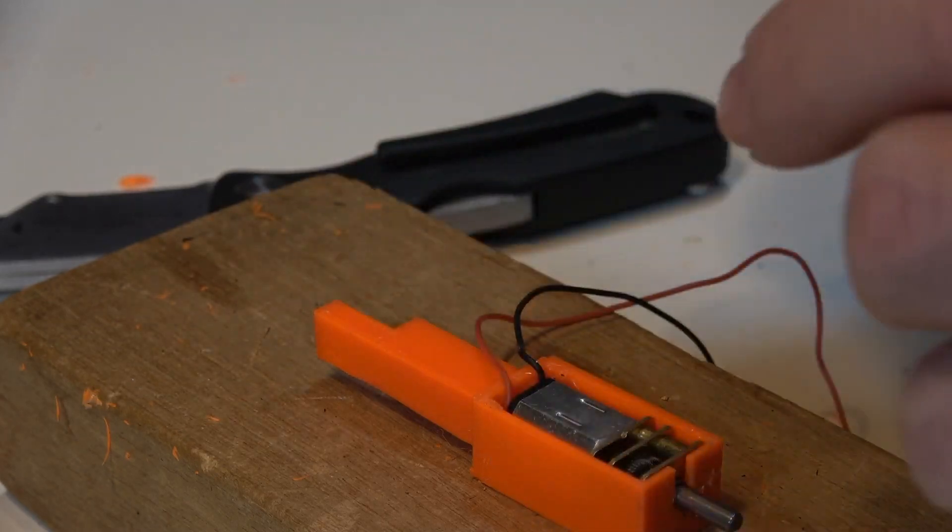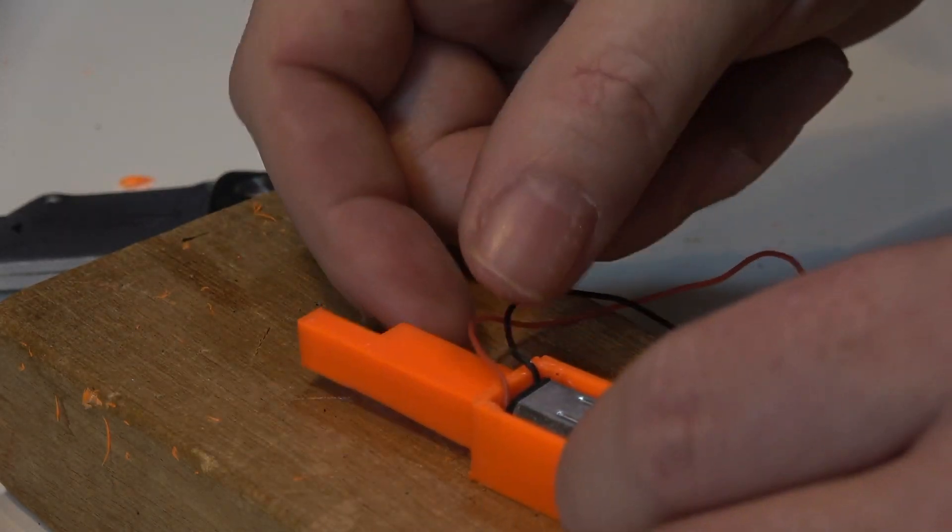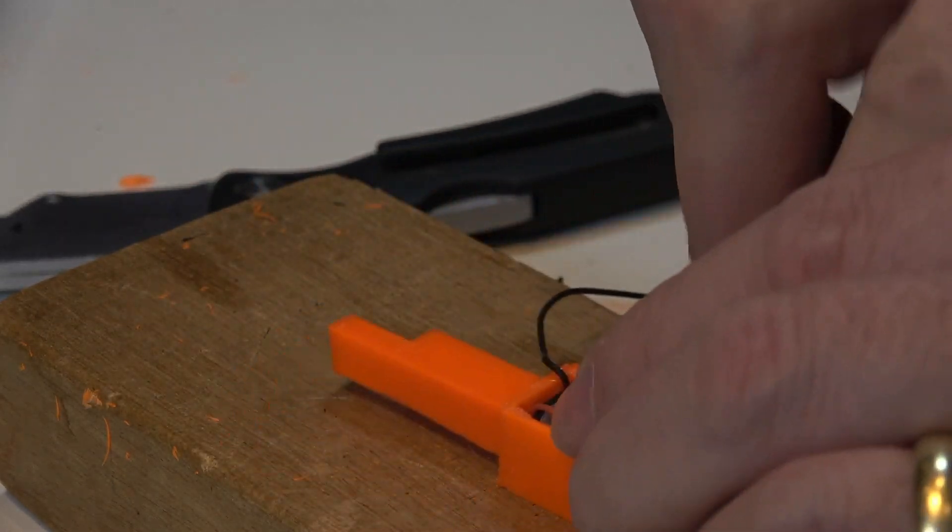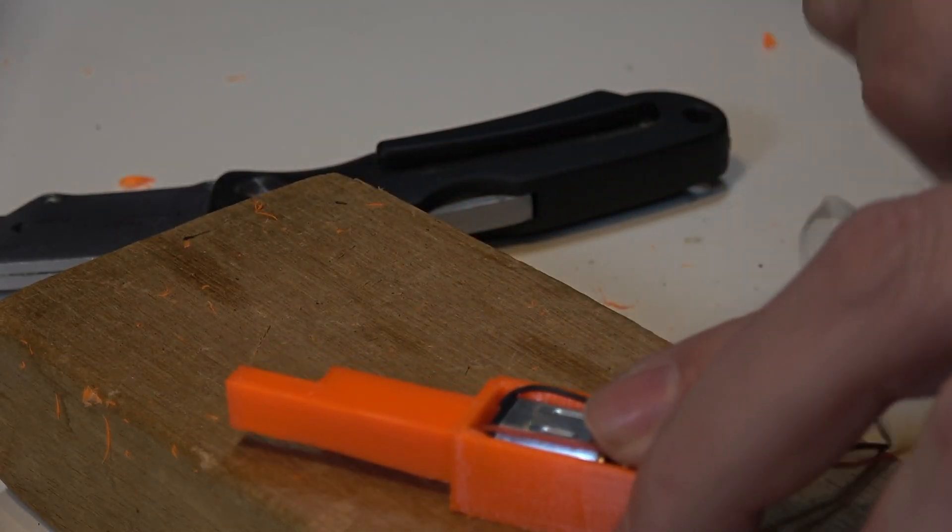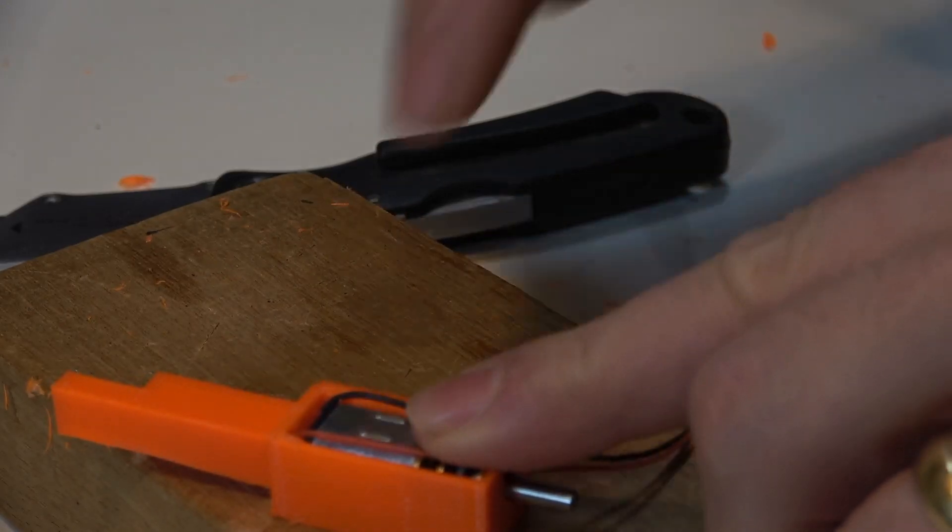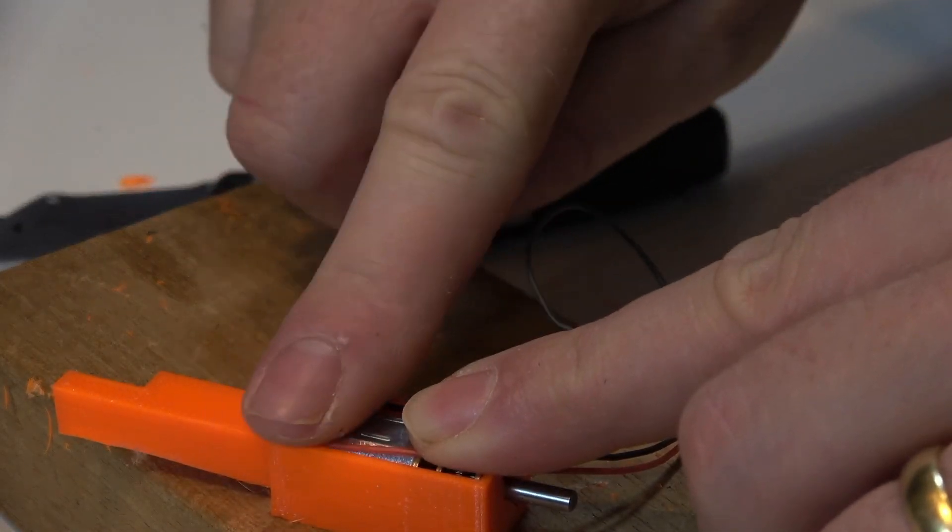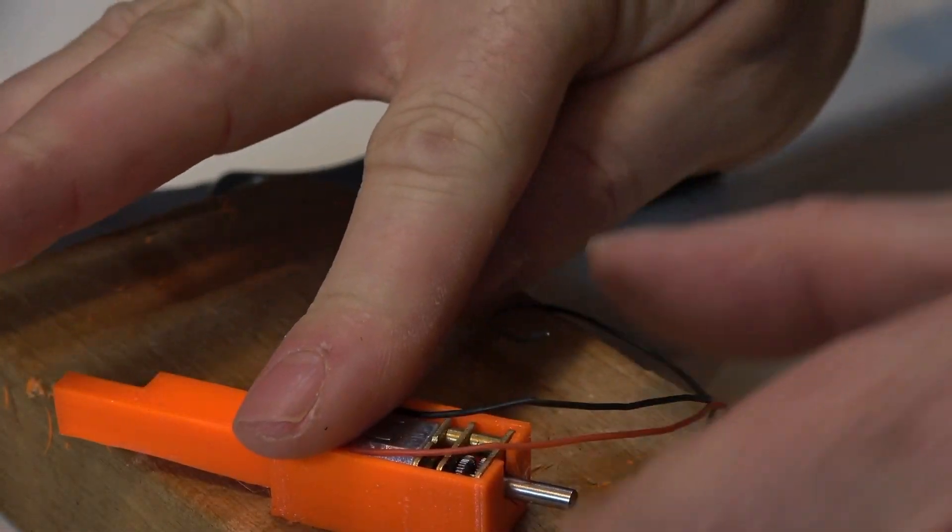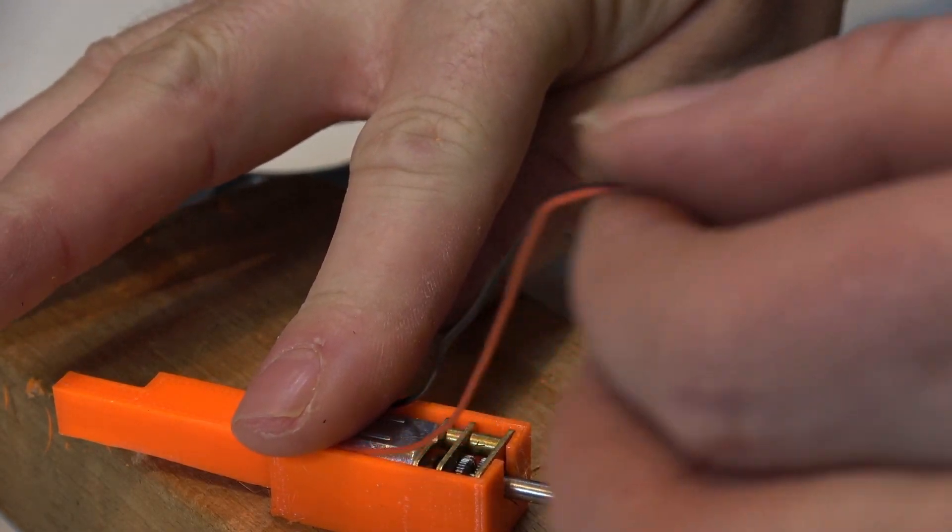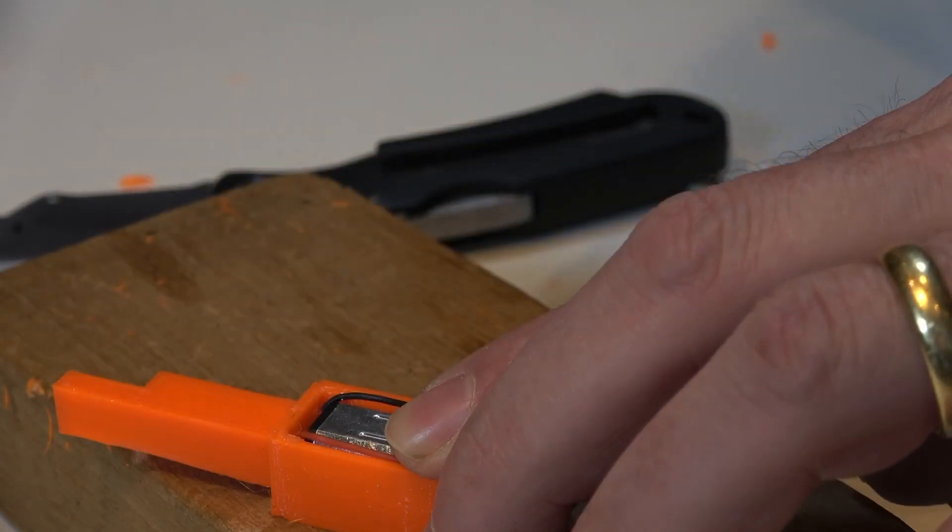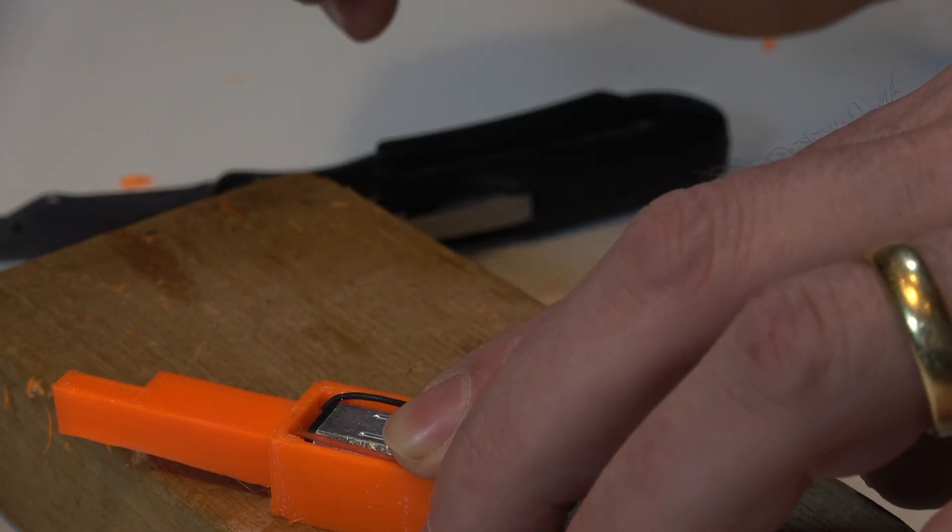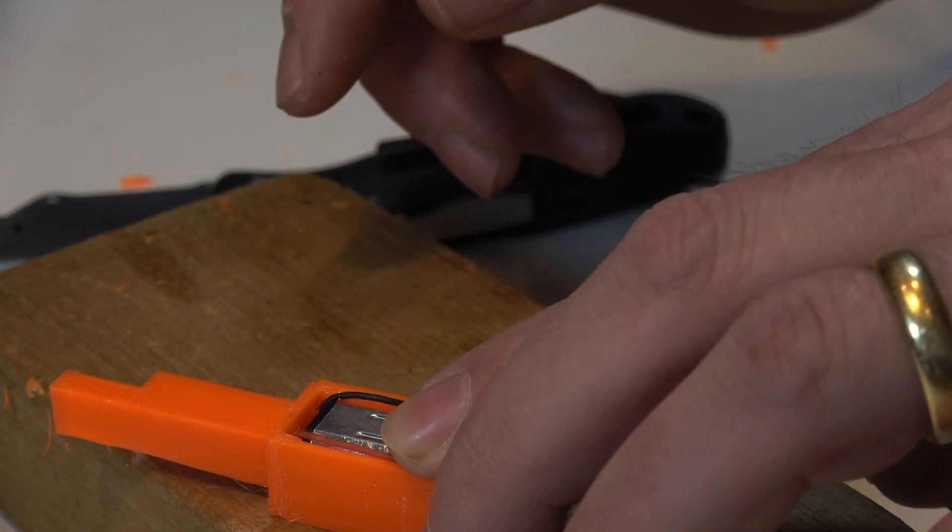Now the next thing we're going to do is put some hot glue on the wires, because this is potentially a weak point on the model. We're going to put it just here and here, and have the wires so that they're going forward like you can see here, just a little bit, because that's going to keep the motors away from the suspension springs, which would otherwise damage the wires and you'll end up having to keep re-soldering it.